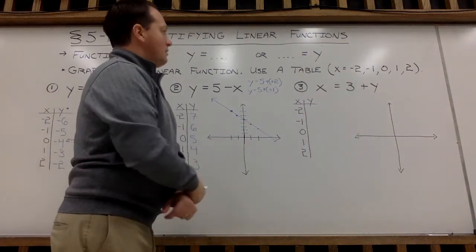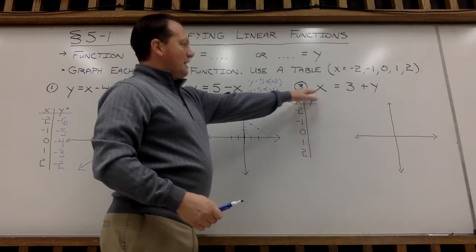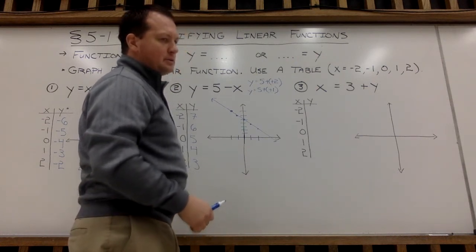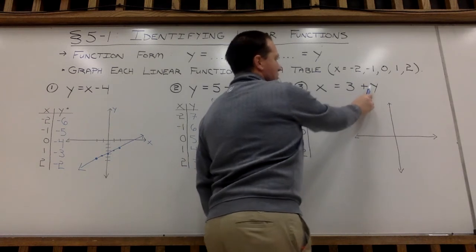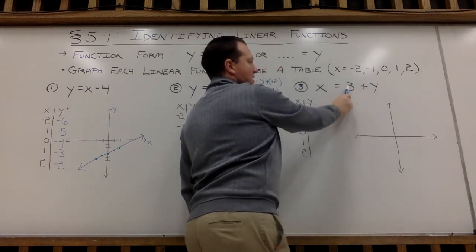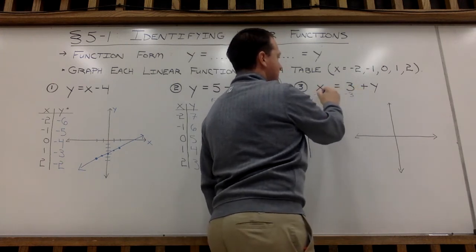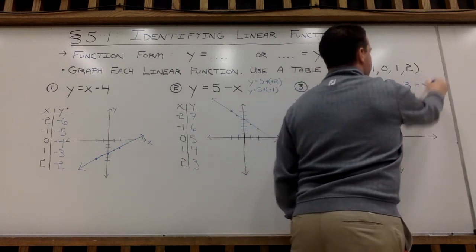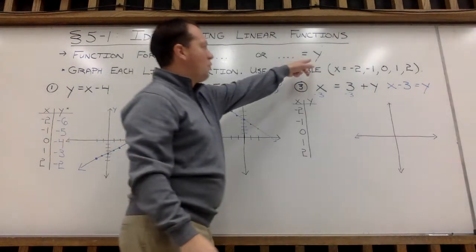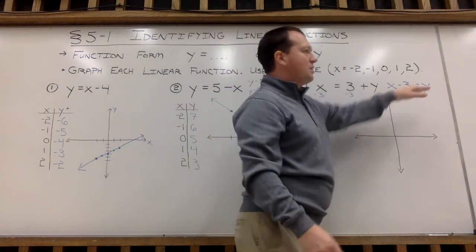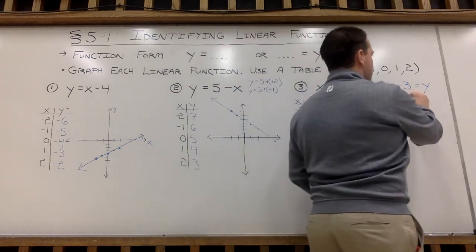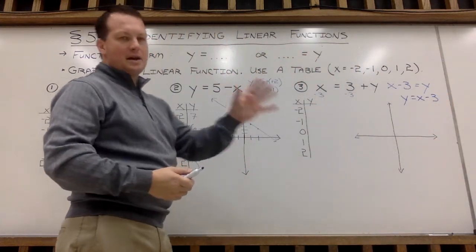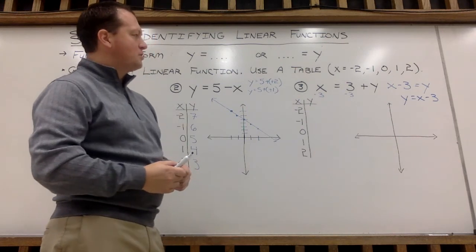Example 3, the final example here. You are given x equals everything else. Your equation here is not in function form. So I need to get this y alone. So I'm going to do that by moving this positive 3 away from y. So I'll subtract 3 from both sides. And I'll have x minus 3 equals y. And again, this is function form because I have the y by itself. If this messes with you, x minus 3 equals y, you can write this as y equals x minus 3. That is just fine. Either way, x minus 3 equals y or y equals x minus 3 are equivalent.